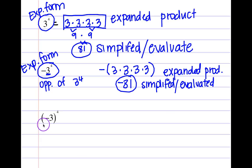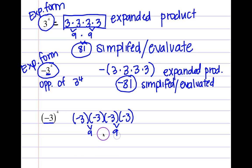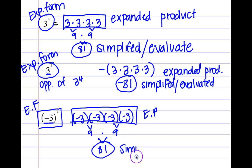Now here, what is my base? The number being raised to the fourth power is negative three — because of the parentheses. So negative three is repeated four times. Here is your expanded product: negative three times negative three times negative three times negative three. If asked to evaluate: negative three times negative three is nine, nine times nine gives me 81. Here is the exponential form, the expanded product, and the simplified answer is 81.